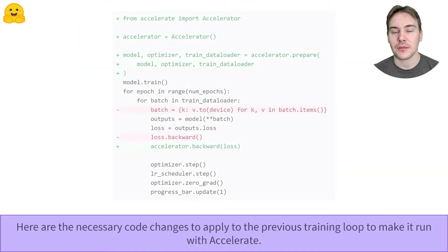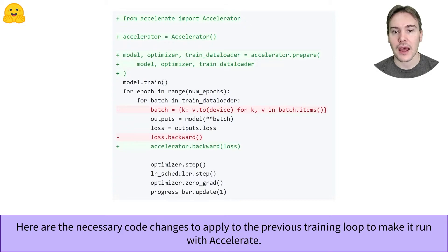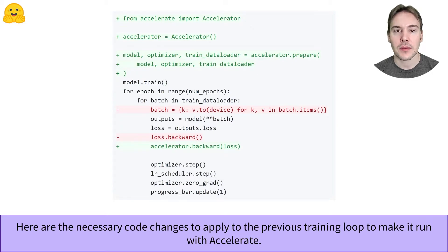Accelerate has been designed specifically to let you retain full control over your training loop, and be as non-intrusive as possible. With just four lines of code to add to your training loop, here shown as the example of the training loop video, Accelerate will handle all the setups and training tweaks mentioned on the first slide. It's only one API to learn and master, instead of 10 different ones.